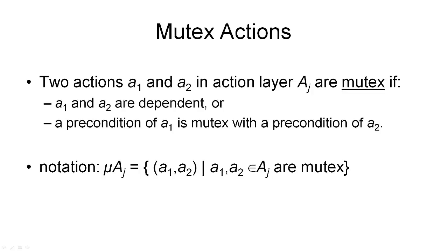This definition is quite simple. Two actions A1 and A2 in the same action layer AJ are mutex if one of the following two conditions holds. Firstly, if A1 and A2 are dependent — so if the dependency defined earlier holds between them — then they are also mutex. Or, if a precondition of A1 is mutex with a precondition of A2, then the two actions are also mutually exclusive. These are the only two reasons why two actions in the same action layer may be mutually exclusive.